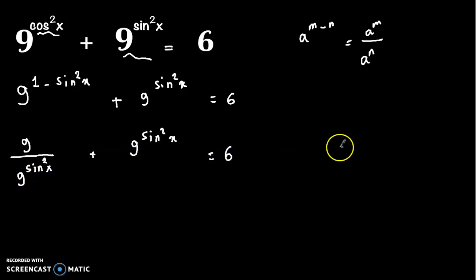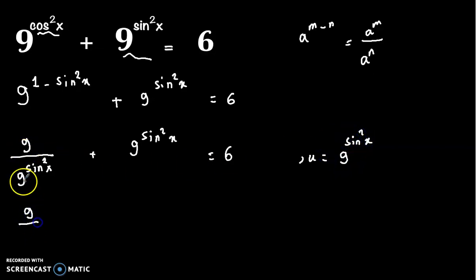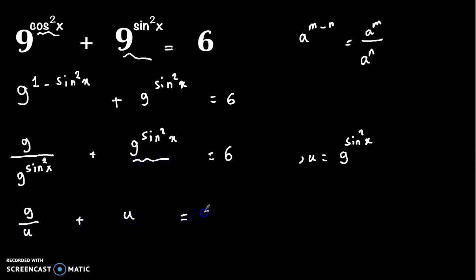Now we will change variable and take u equal to 9 to the power sine squared x. So we have 9 over u plus u equals 6. Now multiply this equation by u.